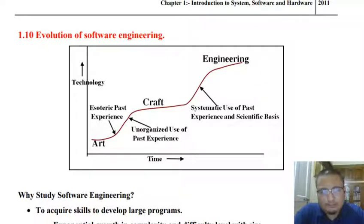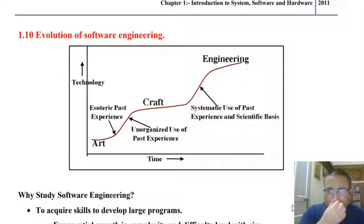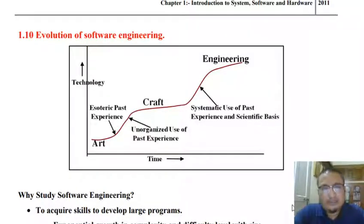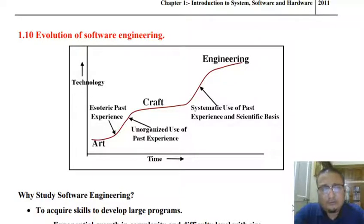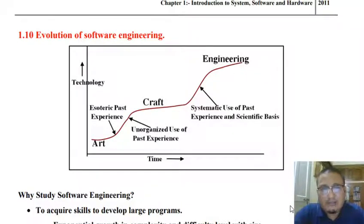Art is often created using one's own perspective and opinion about the entity of interest that you do not want to share. So art neither has a shape nor a size. Likewise, craft is a concept that has a shape but does not have a definite size. For example, in our school days, a duster made by two different students used to look alike but vary in size.